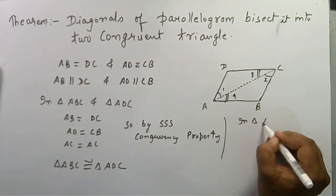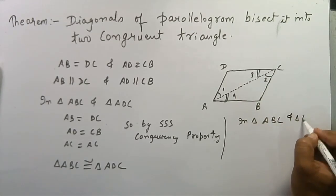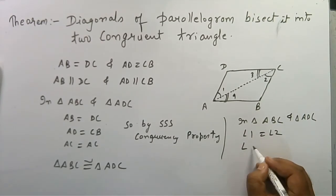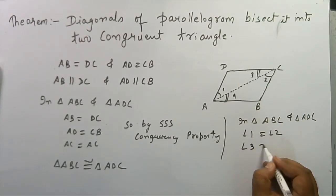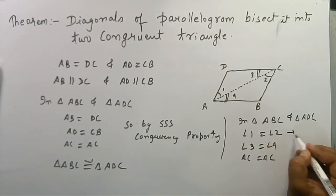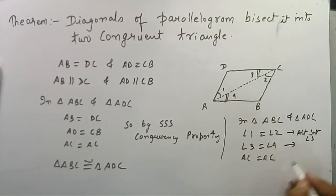is in triangle ABC and triangle ADC, angle 1 equals angle 2 and angle 3 equals angle 4 (these are alternate interior angles), and AC equals AC. So by Angle-Side-Angle congruency property,